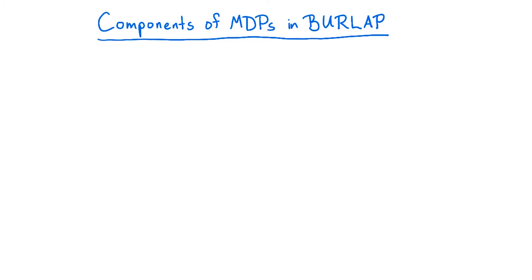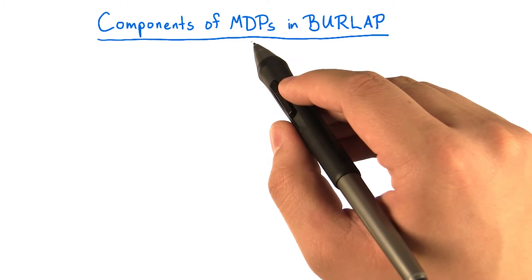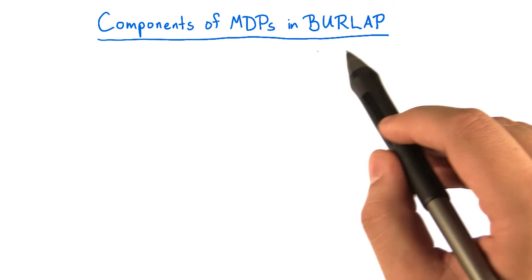Before jumping into the code, let's quickly review the components of a Markov decision process or MDP and see how they are implemented using the burlap library.